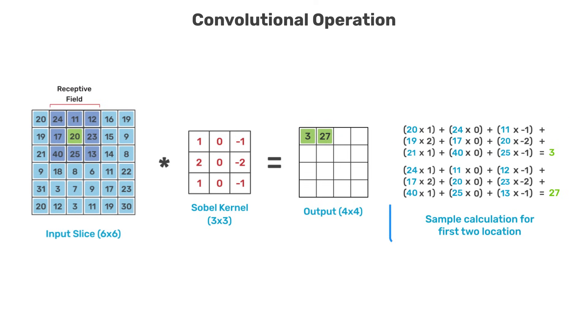A sample calculation is provided for the first two filter locations so you can confirm your understanding of the operation. Notice that at each filter location, the operation produces a single number placed at the corresponding location in the output. In other words, the location in the output corresponds to the center of the receptive field overlaid on the input slice.